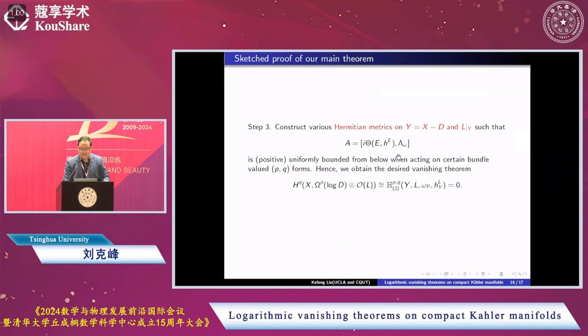The next step is to construct various hermitian metrics on Y and L on Y such that this curvature term is positive, uniformly bounded from below when acting on certain line bundles, bundle-valued p,q-forms. This bundle is a real bundle, a real line bundle in the previous theorem statement. In that case, we get this vanishing theorem by identifying the sheaf cohomology to the harmonic L2 forms on a complete manifold Y. I think I've finished the proof. Thank you.